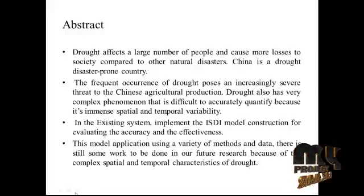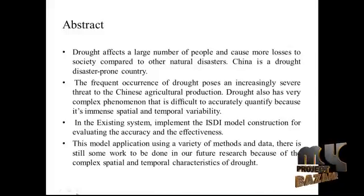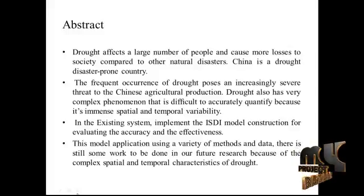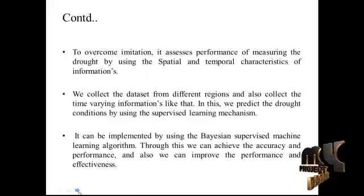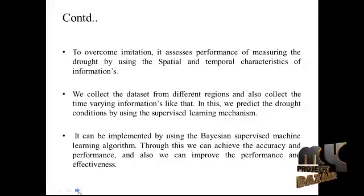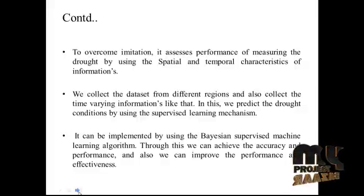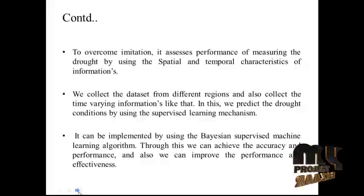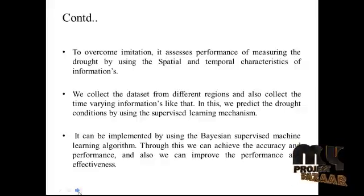In the existing system, the ISDI model construction for evaluating accuracy and effectiveness using a variety of methods and data still needs improvement due to the complex spatial and temporal characteristics of drought. To overcome this limitation, we measure drought performance using spatial and temporal characteristics, collecting datasets from different regions and time-varying information.